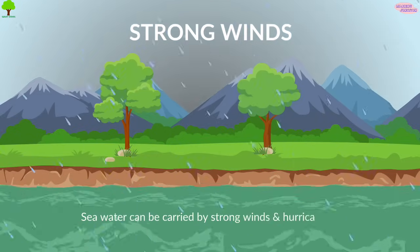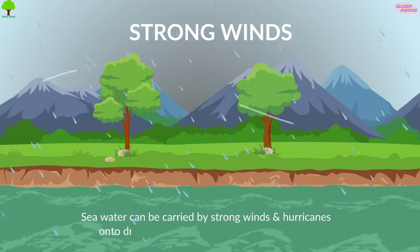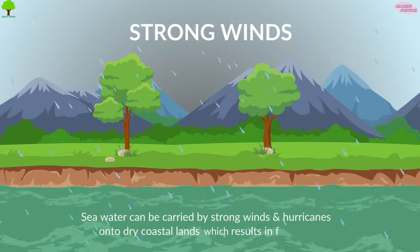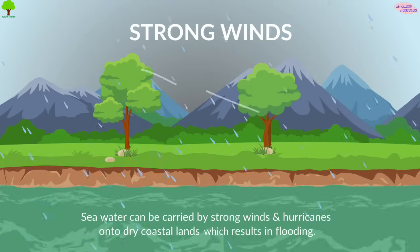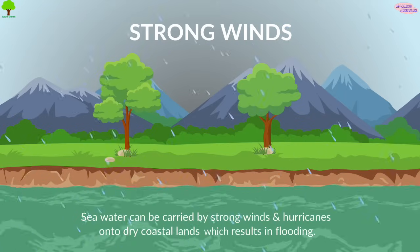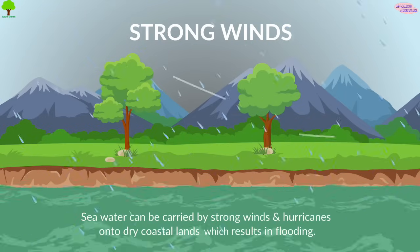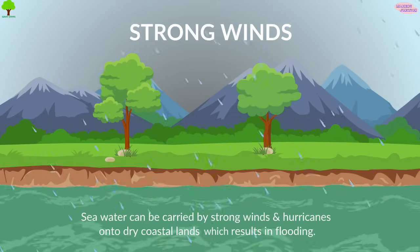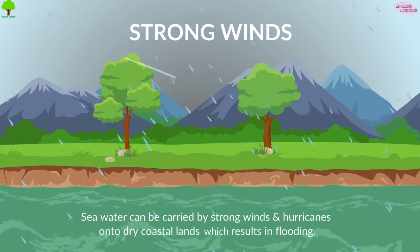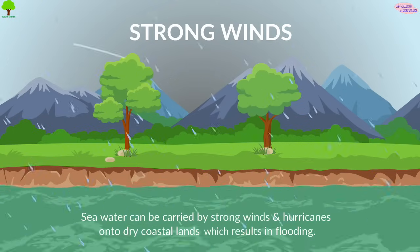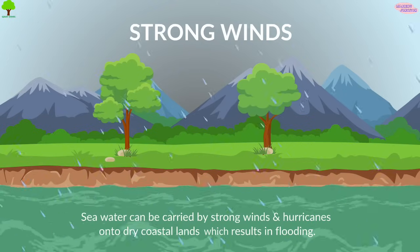Strong winds: seawater can be carried by strong winds and hurricanes onto dry coastal lands, which results in flooding. Sometimes the winds carry rains by themselves. Tropical cyclones and hurricanes can produce rains which cause massive flooding.